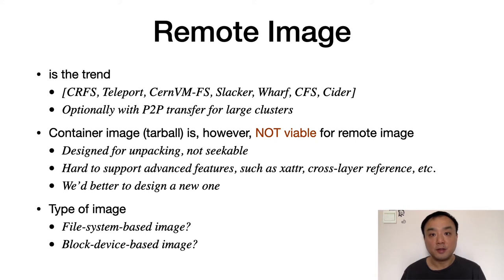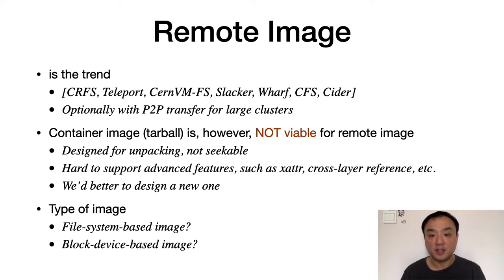Most existing works avoid the format problem by providing unpacked images via NFS, CFS, or FUSE-based file systems, so they have a necessary step to import the TAR images. It's not possible to cold start containers directly from registry with these works. CRFS is trying to enhance the current image format by adding a special index file. The resulting image, called StarGZ, is still a valid TAR, and it can be correctly processed by other container engines that do not support CRFS. On the other hand, we believe it's better not to be confined in TAR, and we should design a new image format based on block device, because it brings benefits and lowers complexity at the same time.